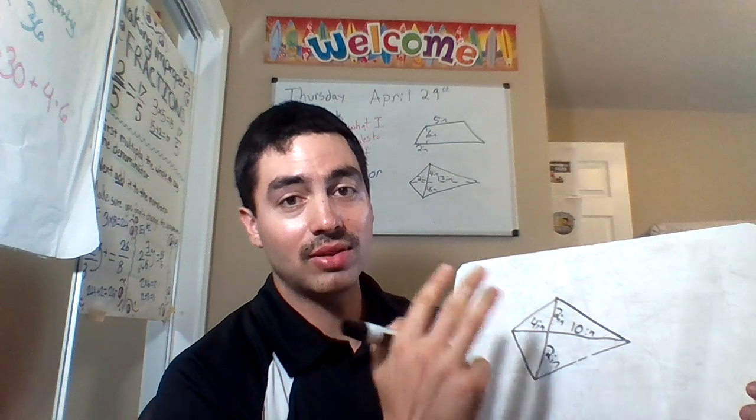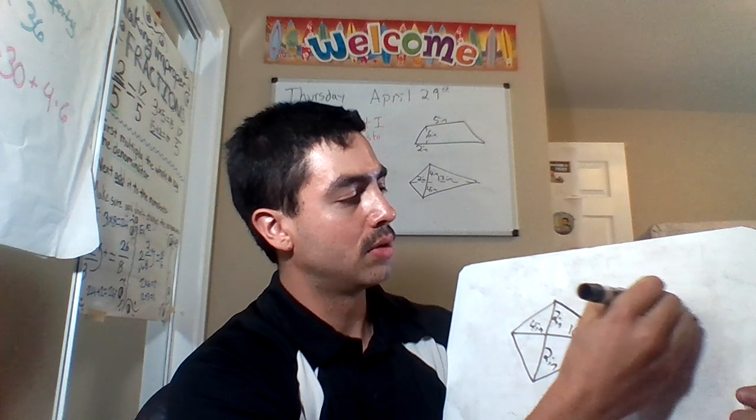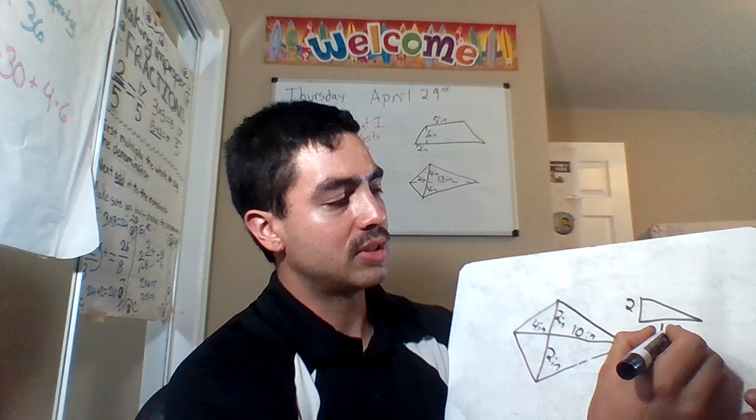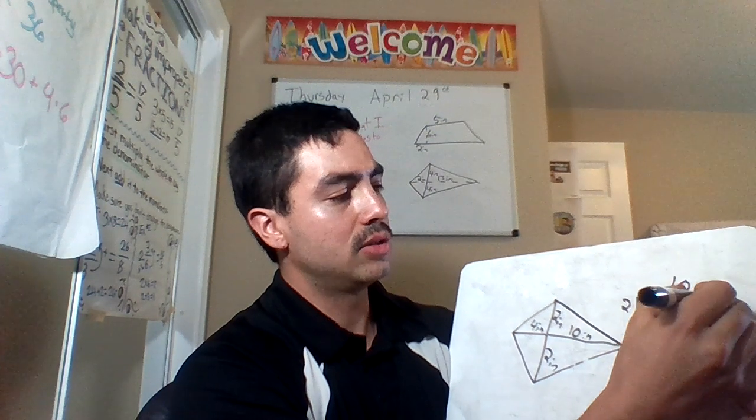Now we split up into four triangles. First triangle height is two. Base is ten. Two times ten is twenty. Divide by two is ten. And that's ten inches squared.